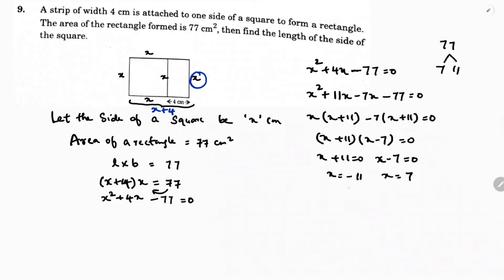Since the length of the side of a square cannot be negative, we reject x = −11. Therefore, the side of the square is 7 cm.